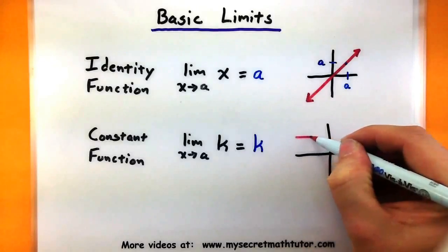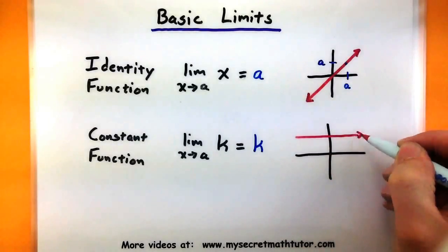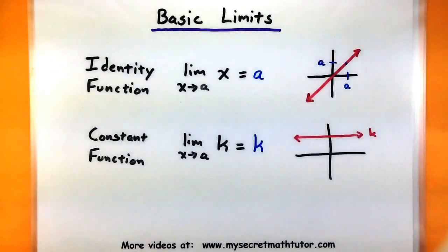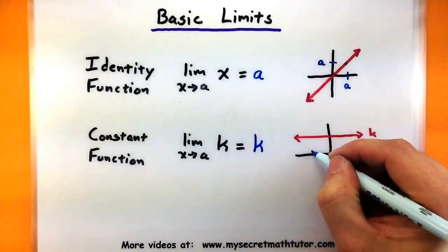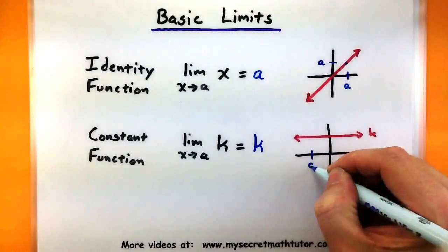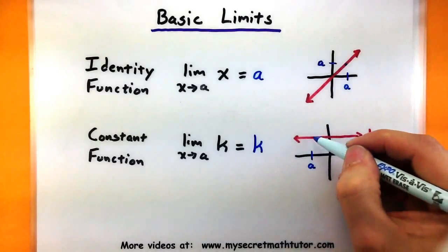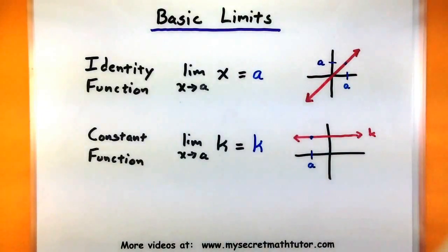Now the other function, our constant function, this is basically a horizontal line at k. So no matter where I look at this line, its y value is always k. So as I'm looking at choosing x values around a, well, basically it will always be k on the y values.